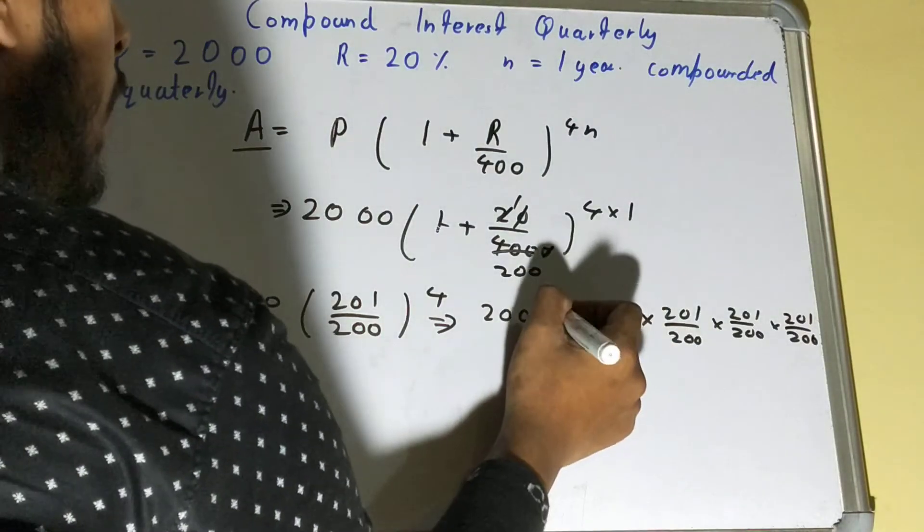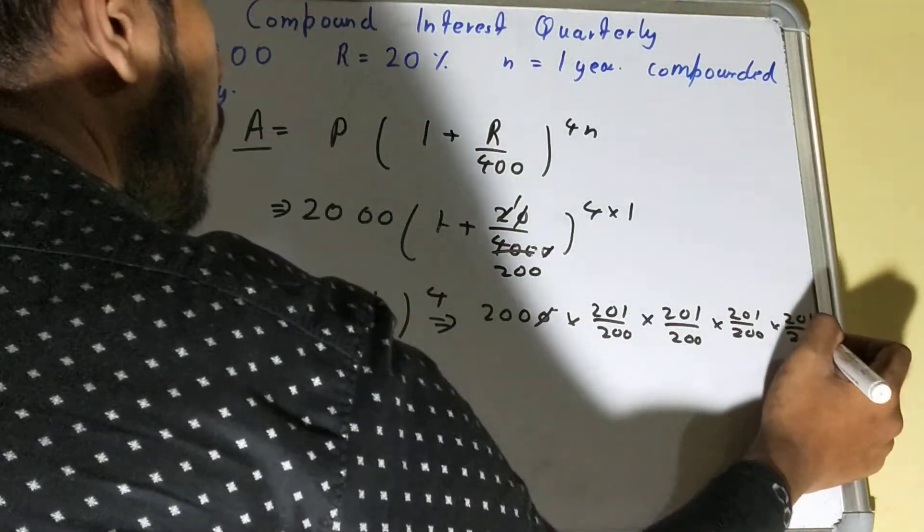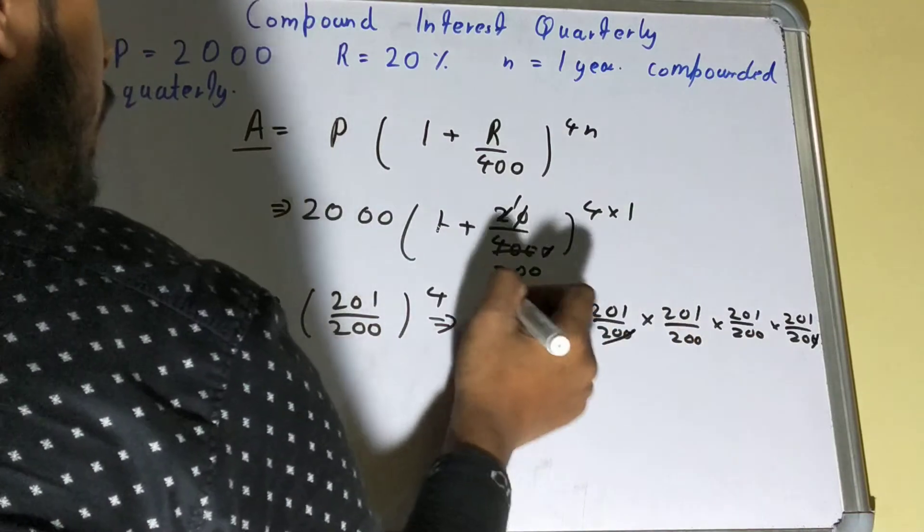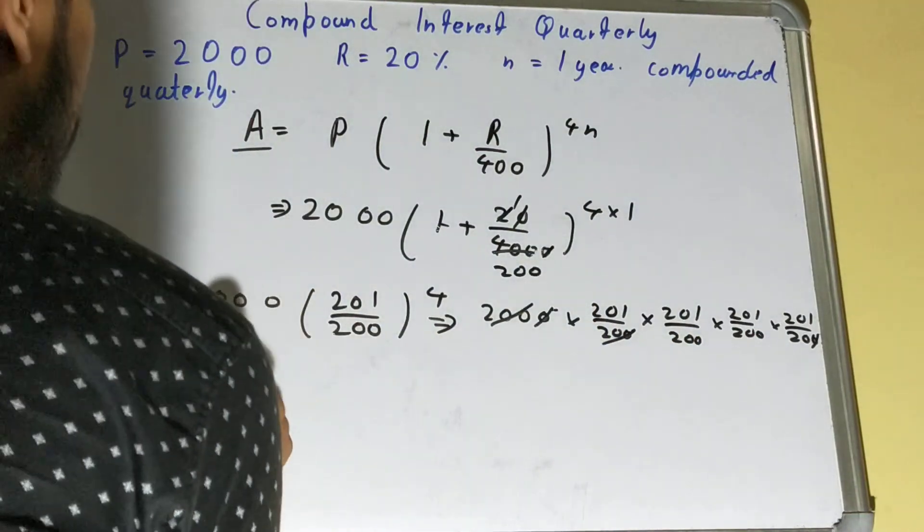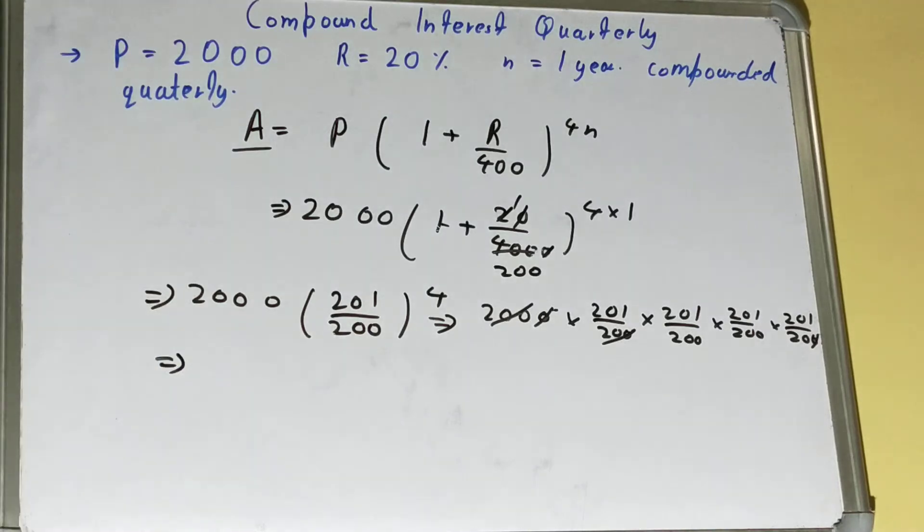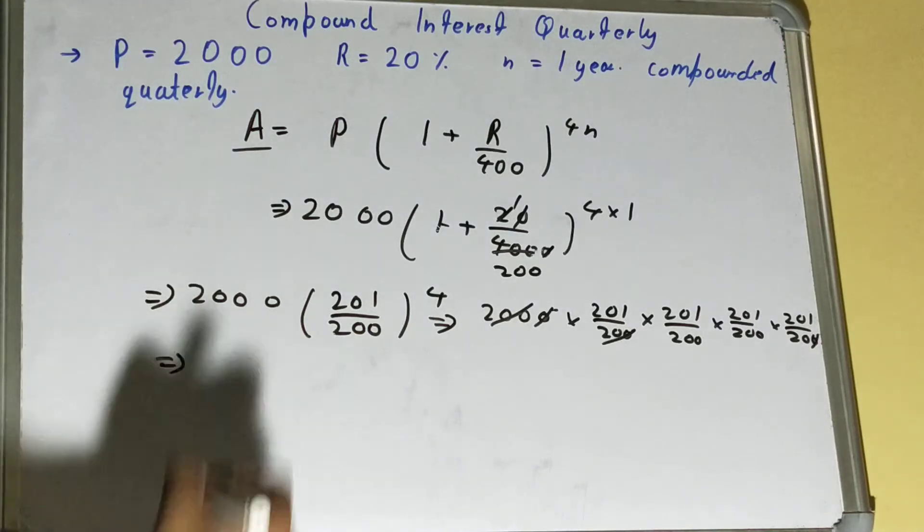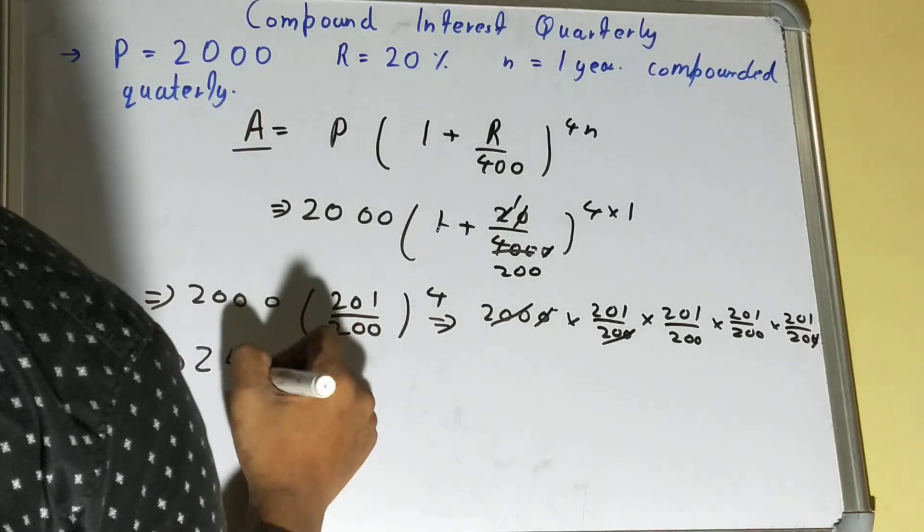Like this, one zero cancels over here, 120 cancels over here with this. After that, you certainly have to use the calculator and the answer you will get is 2431.